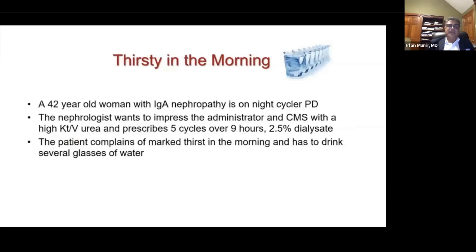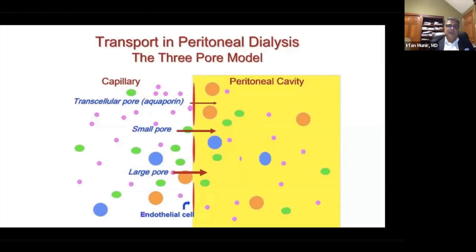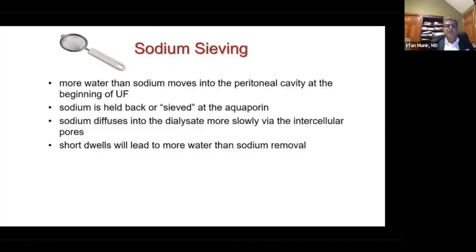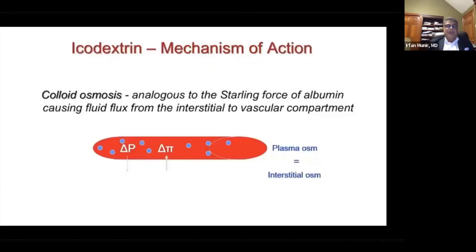The next case is a 42-year-old woman with IgA nephropathy. Regarding pore types, there are small pores, which are intercellular pores, and fluid removal occurs through both small and large pores. The water being removed is hypo-osmotic compared to plasma, meaning sodium is being held back — a phenomenon called sodium sieving. Icodextrin is the next topic I'll briefly discuss, which is particularly relevant in high transporters who have issues with ultrafiltration.